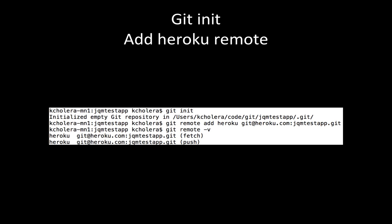To deploy, we first initialize the repo with 'git init'. You cd into your app folder — for example, the Play app named JQM Test App — and then do 'git init', which initializes an empty Git repo. Then, remember the Git URL we got when we created the app on Heroku. We add the remote: 'git remote add heroku [url]'. This says: I want my remote named 'heroku' to point to this URL. You can verify the remote was added correctly by running 'git remote -v', which will show you the fetch and push Heroku URL.